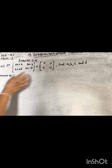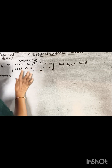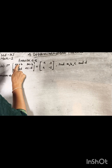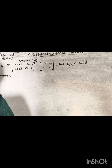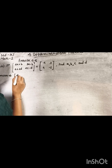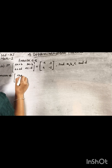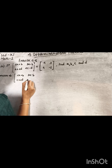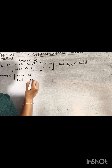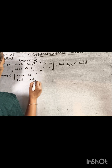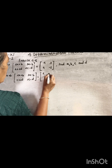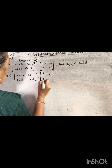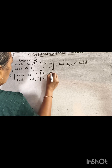Solution. If these two matrices are equal, then the corresponding elements are equal. So: 2a plus b, 3a minus b, c plus 2d, 2c minus d equal to 2, 3, 4, and negative 1.